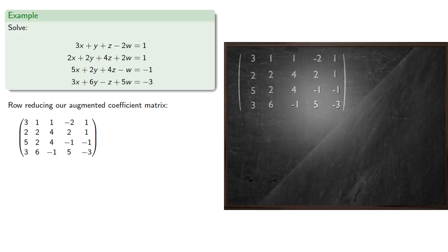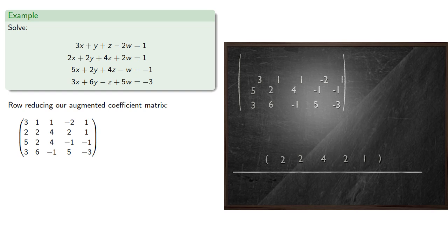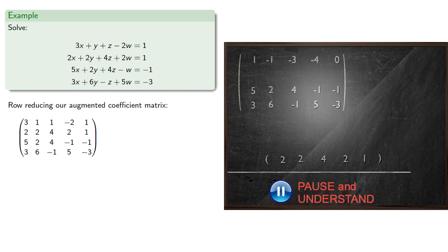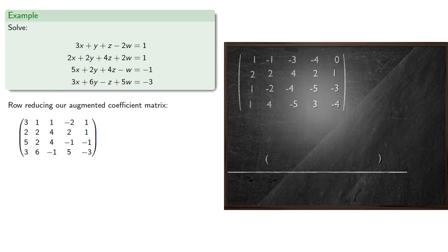So if we look at the same problem: in the first column, the least non-zero coefficient is in the second row, so we'll use that as our pivot row. We can subtract it from the first row, subtract it twice from the third row, and subtract it from the fourth row. These will give us new first, third, and fourth rows.